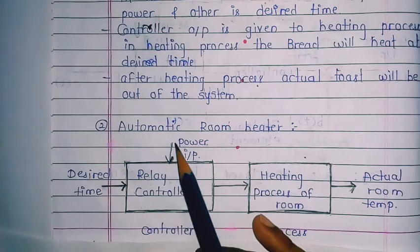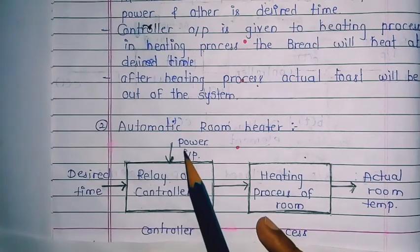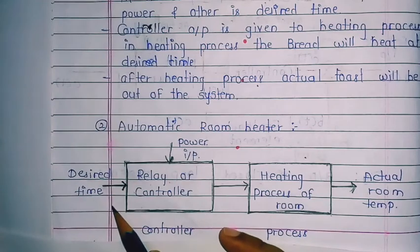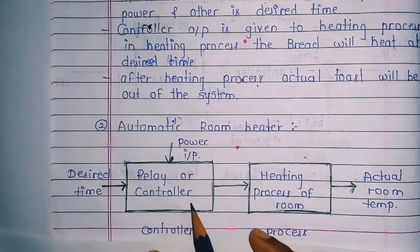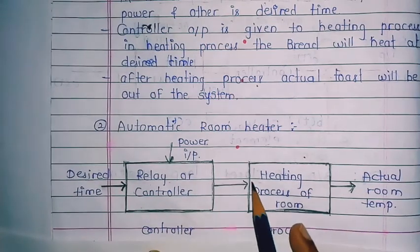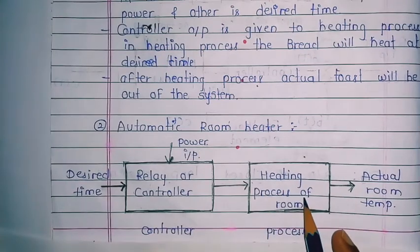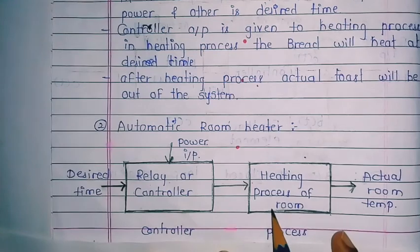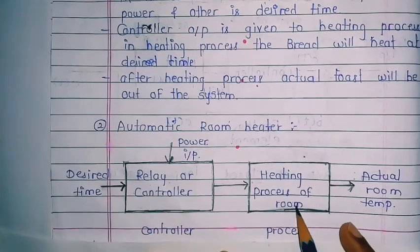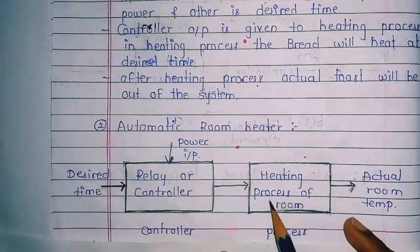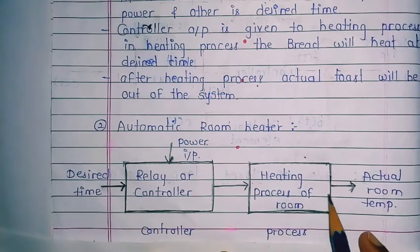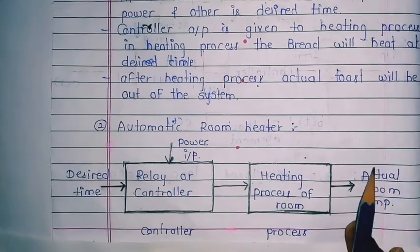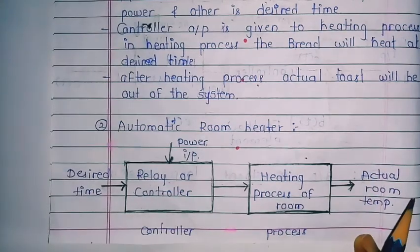Working principle of room heater: the desired time is given to the relay or the controller. The relay or controller again has two inputs — power input and desired time. The controller output goes to the heating process of the room, which heats the room and produces the actual room temperature.